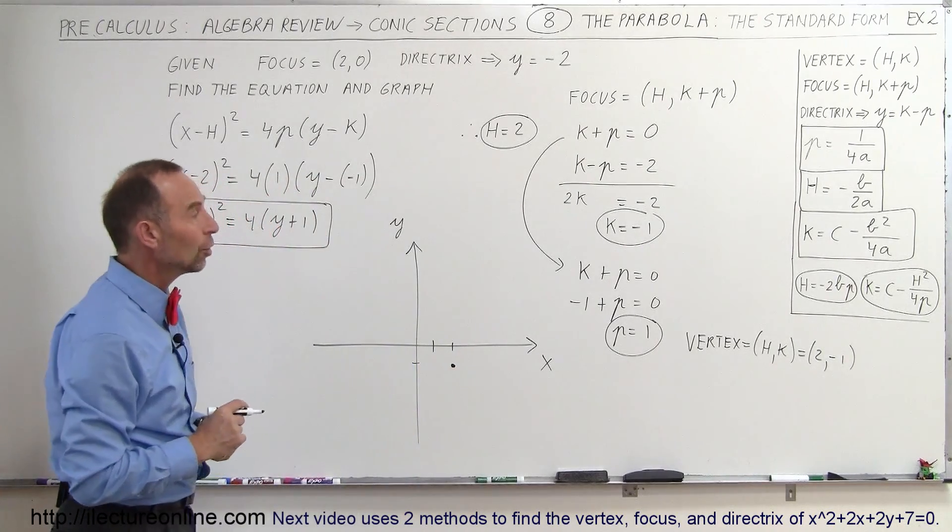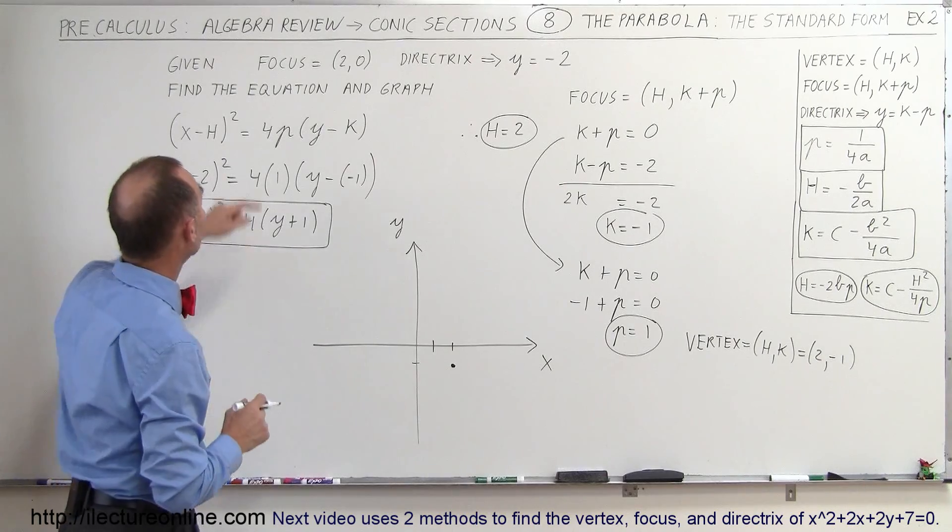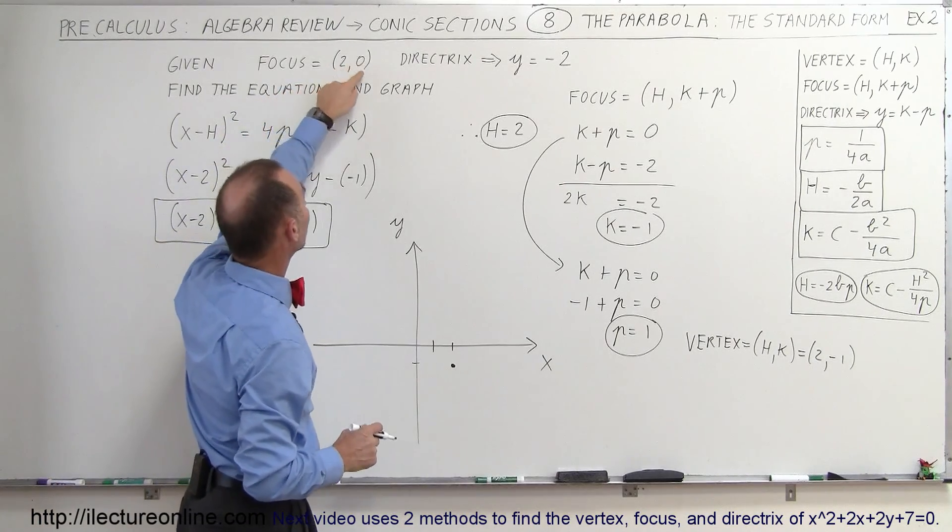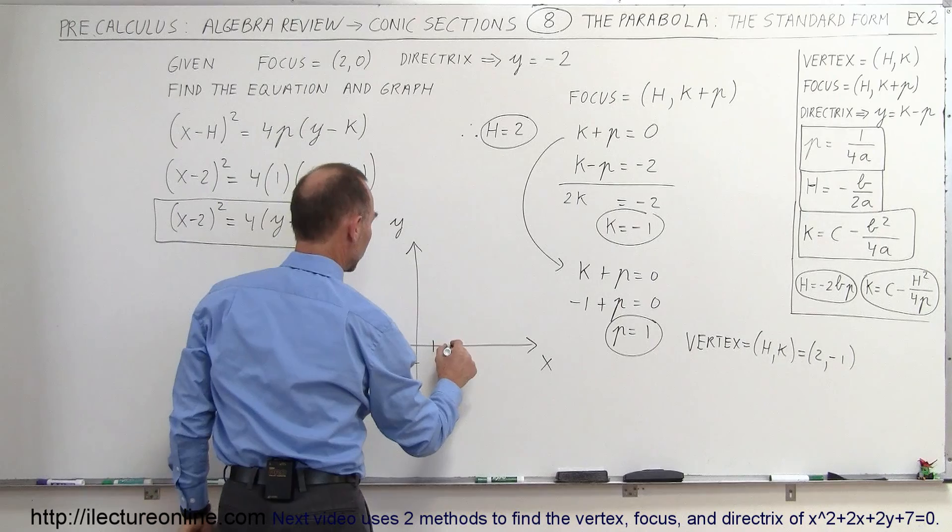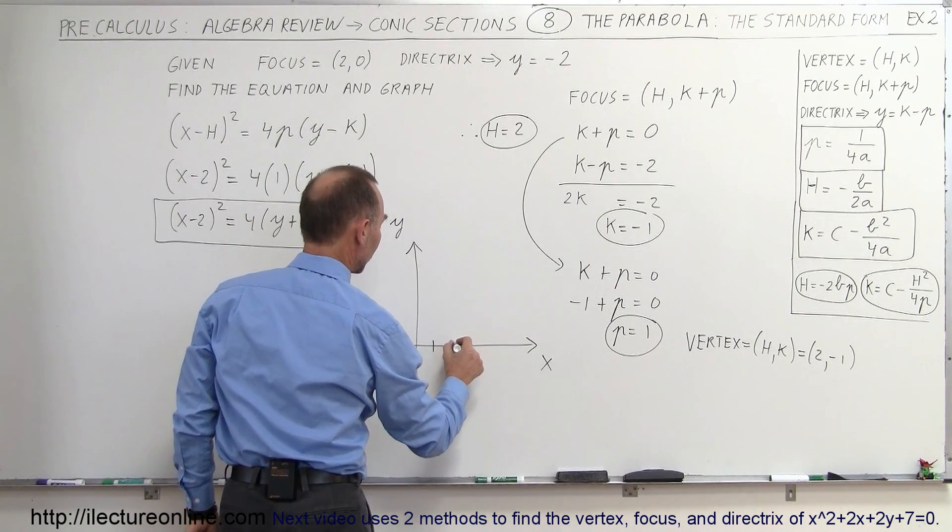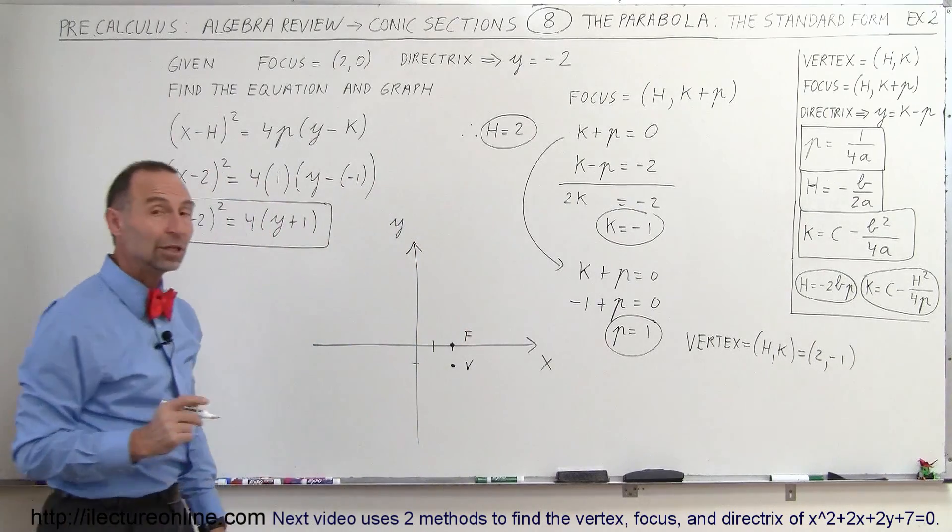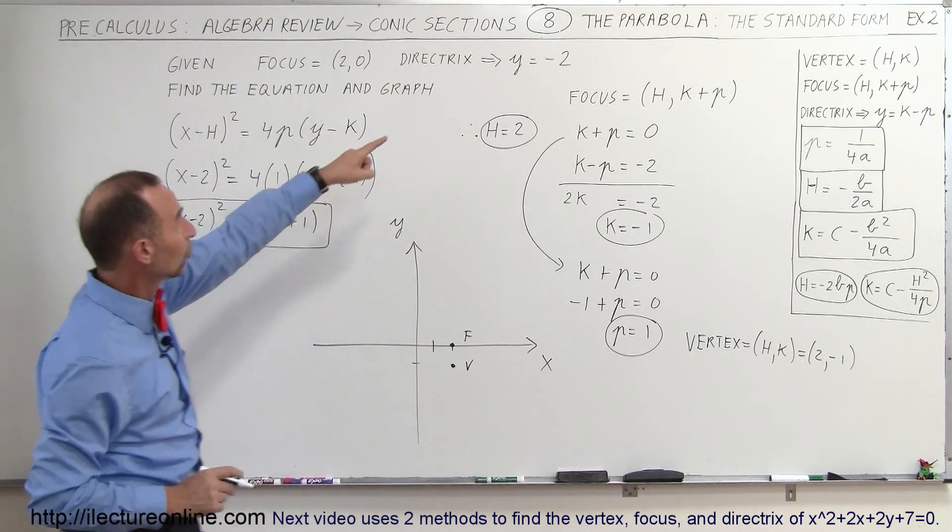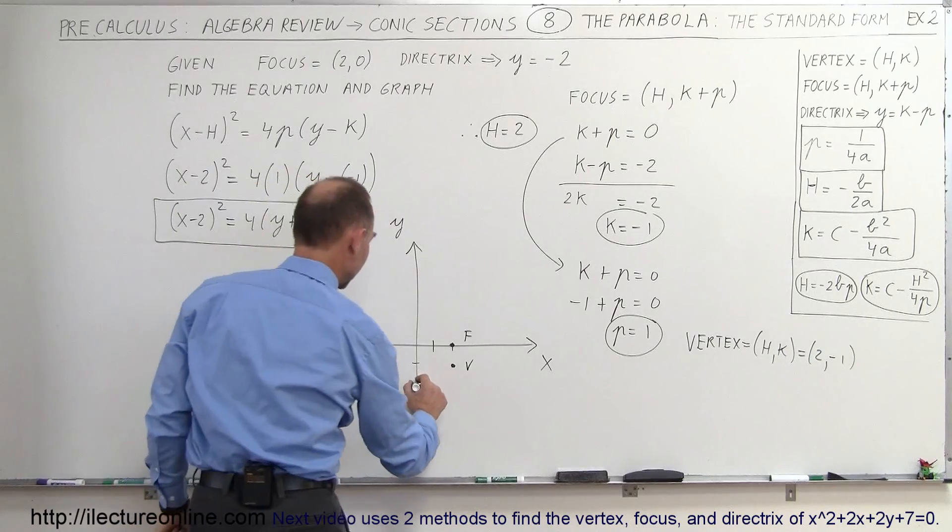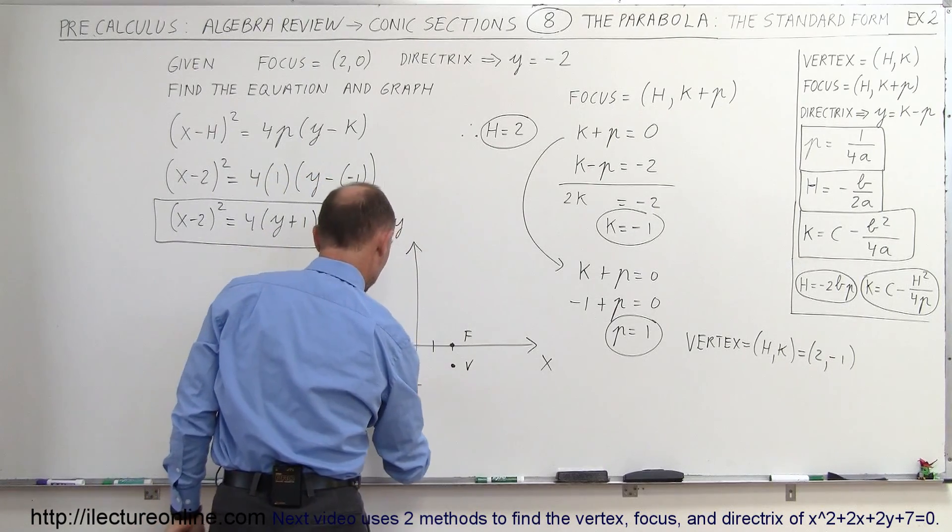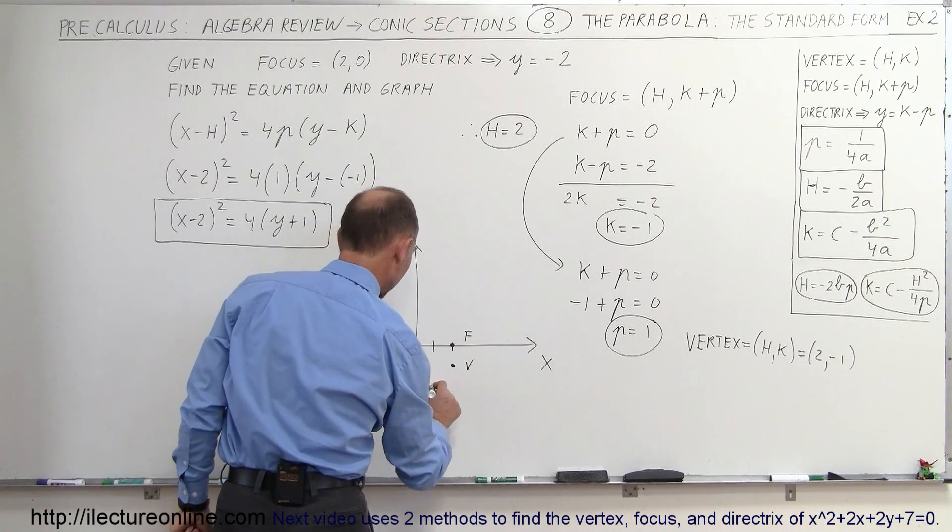Okay, now we need to know the location of the focus which is given to us right here. It's (2, 0), so that would be the focus. So let's put an F along that and let's put a V around that. And now we need to know the equation of the directrix which is y = -2, so it would be at -2 down here. So that means that this line right here represents the directrix.